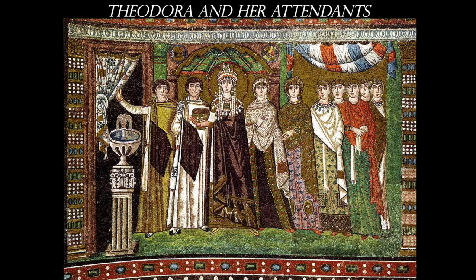Across the altar is Theodora and her assistants, and she is standing in as Mary. You can see the three Magi embroidered on her gown. She also has a halo around her head and carries a goblet containing the wine, serving as the other half of the Eucharist.